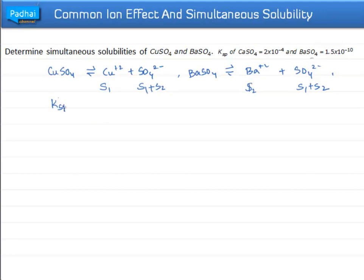We can write Ksp of CuSO4 as S1 multiplied by (S1 plus S2), and similarly Ksp of BaSO4 as S2 multiplied by (S1 plus S2).